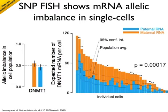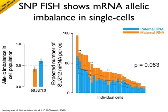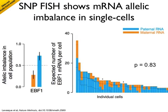Looking at the single cell data, we found that individual cells express DNMT1 with a varying degree of bias towards the paternal or maternal allele. This means that the balance we see at the population level hides the fact that individual cells could be behaving very differently according to which version of the DNMT1 RNA they express. The p-value is our accounting of how often you'd expect to see single cell imbalance just by chance. FUS12 and EBF1 both had single cell behavior consistent with the allelic balance observed at the population level.